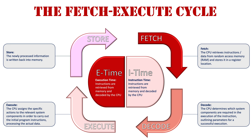I hope this video has given you an understanding of the fetch-execute cycle — essentially that it has two phases: the I-time phase, which is setting up the data for processing, and the E-time phase where it is actually processed and stored back into RAM for use by the user. The four stages are fetch, decode, execute and store, which are constantly happening in your computer as new data comes in and new information is created.